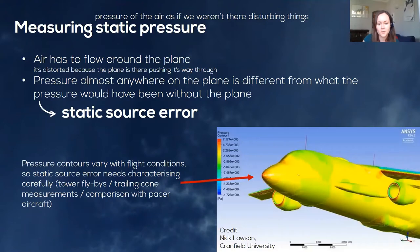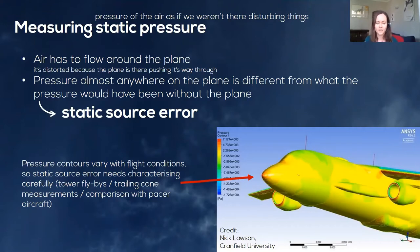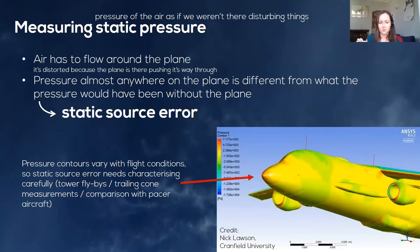Down here in the bottom right we have some CFD results from Nick Lawson at Cranfield University showing the pressure contour over the surface of our aircraft. You can see the orange on the nose indicates pressure is increased at the very front of the aircraft, and above the wings it's decreased as you would expect. These pressure distributions vary with flight conditions — with altitude and how fast the plane is going — so you need to know how your choice of measurement position affects the measurement at different altitudes and speeds.